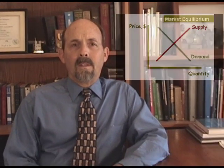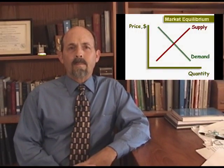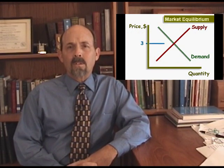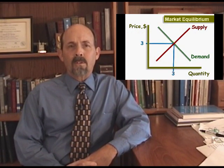Supply and demand drive markets towards equilibrium. Market equilibrium is achieved when the quantity producers are willing and able to supply is equal to the quantity that consumers are willing and able to purchase. There's only one price where supply equals demand. In this market, equilibrium occurs at a price of $3, where three units will be offered and purchased.